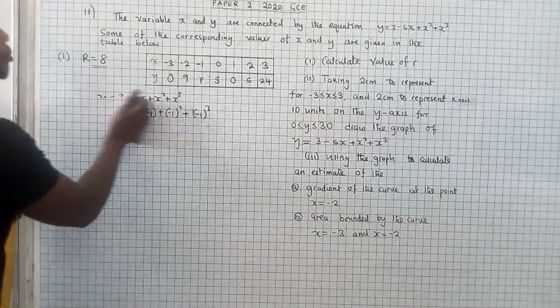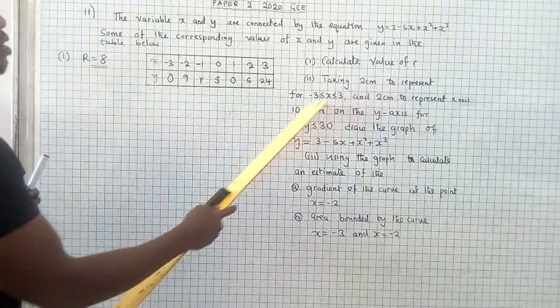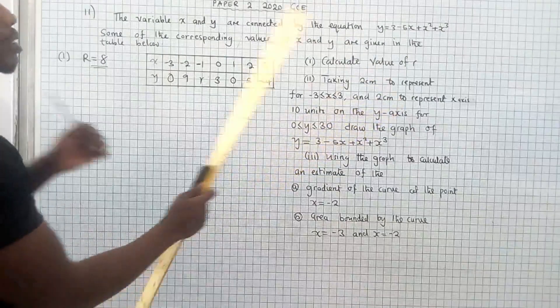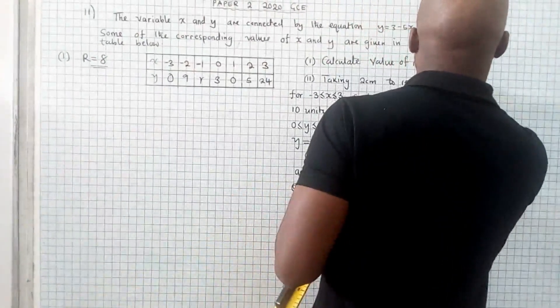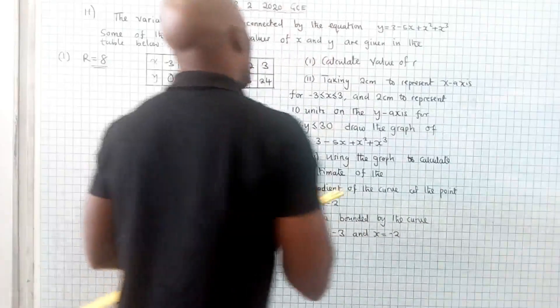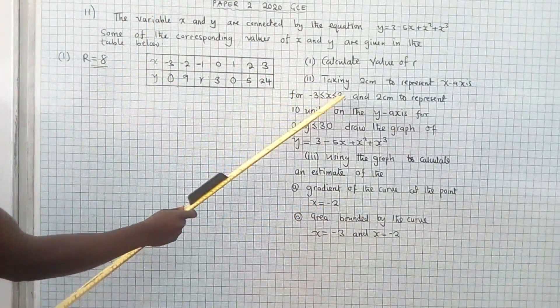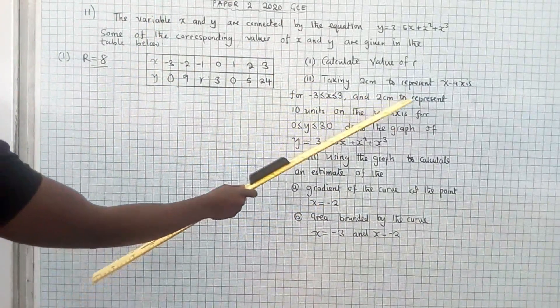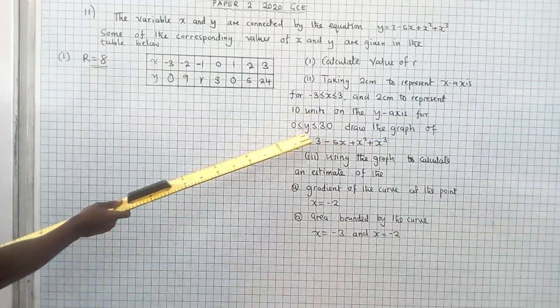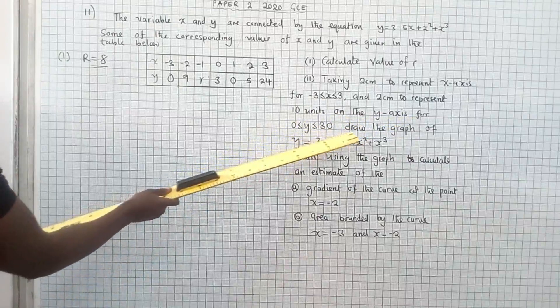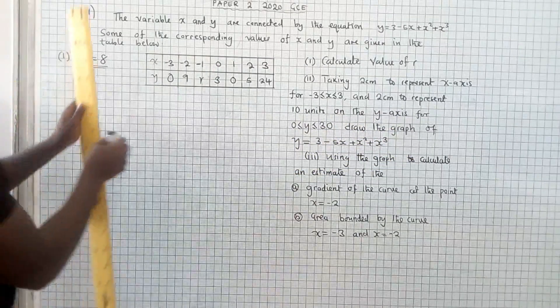Now what we should do? They are saying, taking 2 centimeters to represent x axis. This is the x axis. Negative 3 is less or equal to x, less or equal to 3. And 2 centimeters to represent 10 units on the y axis, for 0 is less or equal to y, less or equal to 30. Draw the graph of this.